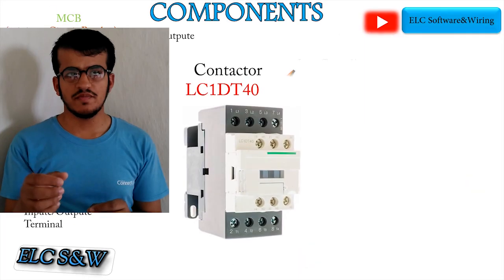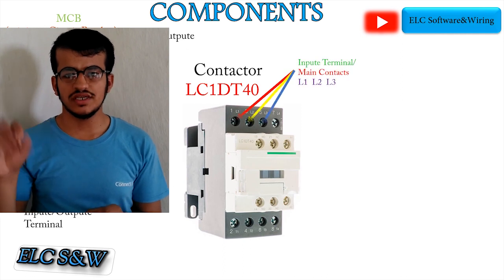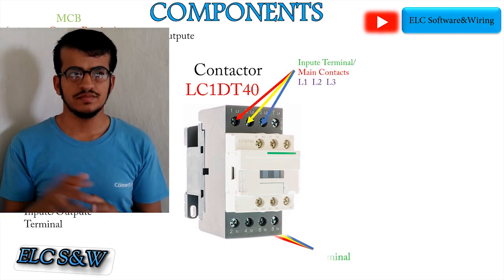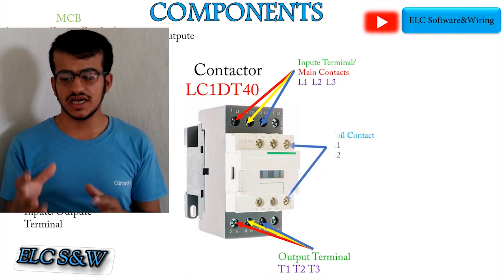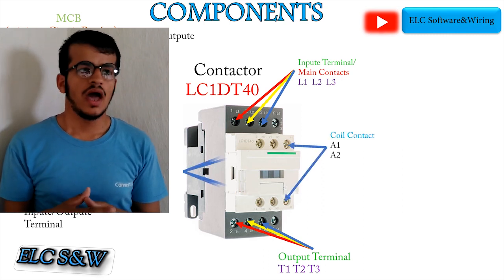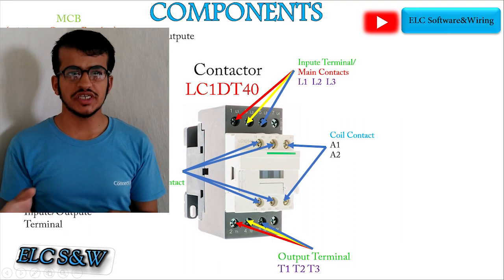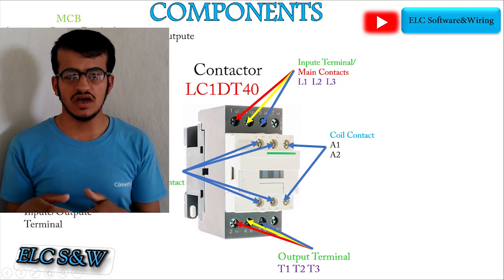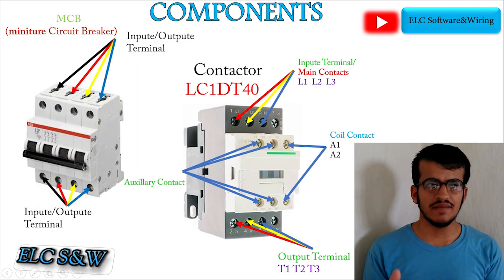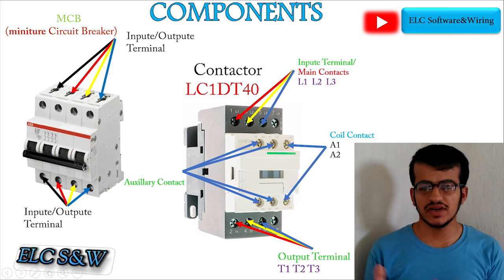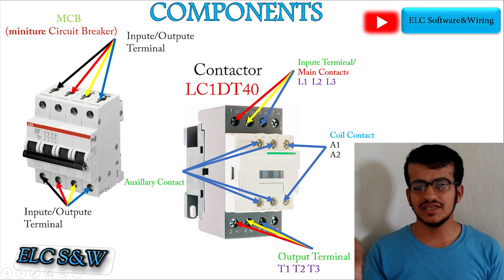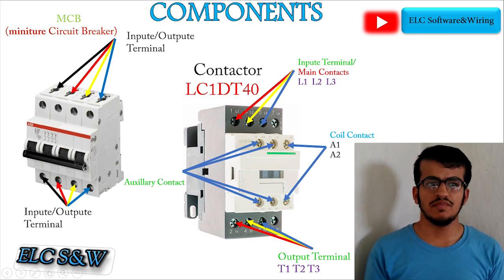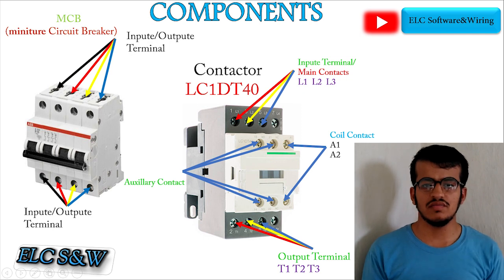Contactor type LC1D T14. Basically, a contactor is an electrical switching device. It is used for switching an electrical circuit on and off. It is a special type of relay and it has input-output terminals, coil contacts, and auxiliary contacts.